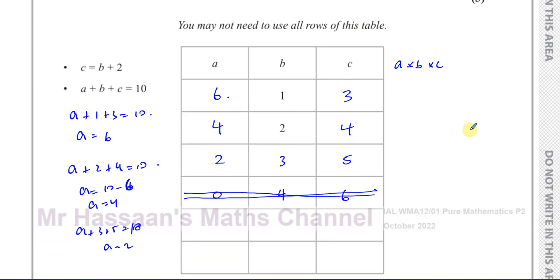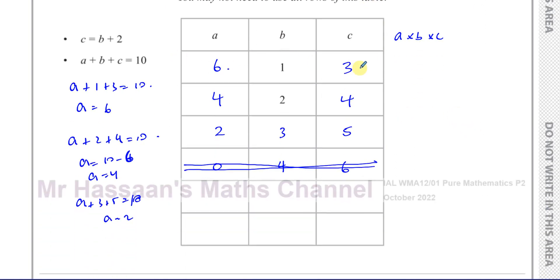So you have six times one times three, that's 18. And then you have four times two, which is eight, eight times four, which is 32. And you have two times three, which is six, and six times five, which is 30. So we can see that this is even. And this is also even. And this is also even.